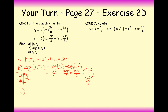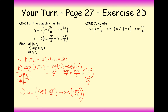For part C, we multiply the two complex numbers together. The modulus is 30, and the argument is −3π/4. So the answer is 30(cos(−3π/4) + i sin(−3π/4)).